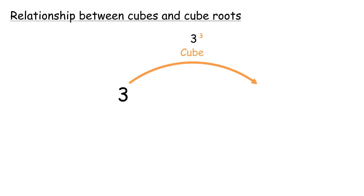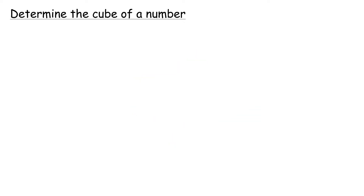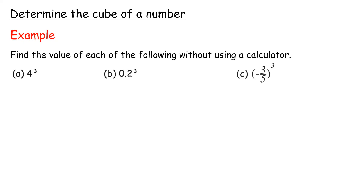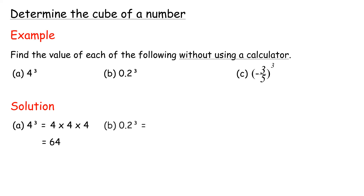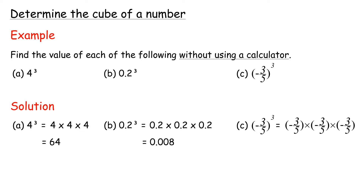Find the value of each of the following without using a calculator. Solution A: 4 cubed equals 4 times 4 times 4 equals 64. B: 0.2 cubed equals 0.2 times 0.2 times 0.2 equals 0.008. C: Negative 3 fifths cubed equals negative 3 fifths times negative 3 fifths times negative 3 fifths equals negative 27 over 125.